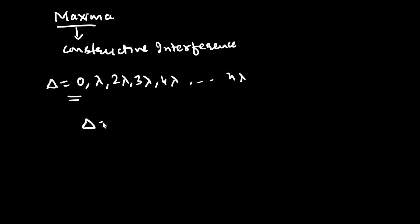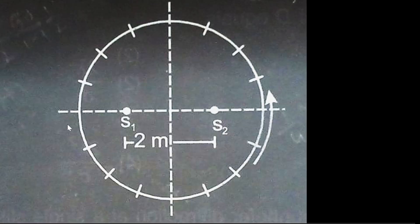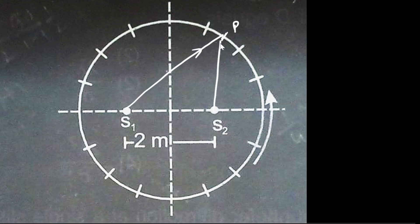The conditions of path difference can be found at various points along this circle. To solve this, I have taken a generalized point P on the circle. One ray from S1 is reaching point P and one ray from S2 is also reaching point P. So the path difference is equal to S1P minus S2P.